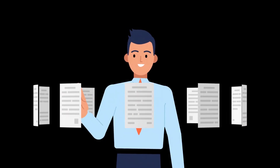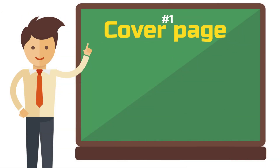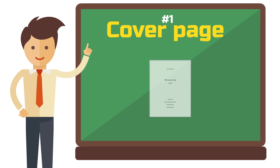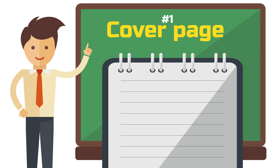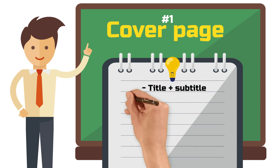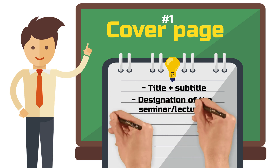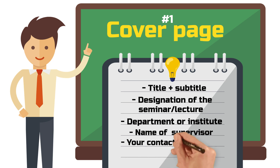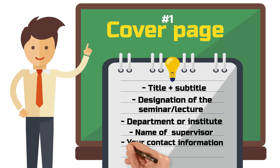Step 1: The Cover Page. The first physical page of your paper or thesis is some sort of cover page. Check your department's information to see if there is a template for it; otherwise you can design your own. The following information must not be missing: title of your work, subtitle, designation of the seminar or lecture, the department or school, name of the supervisor including all academic titles, and your contact information such as name, address, university, email, and student ID.